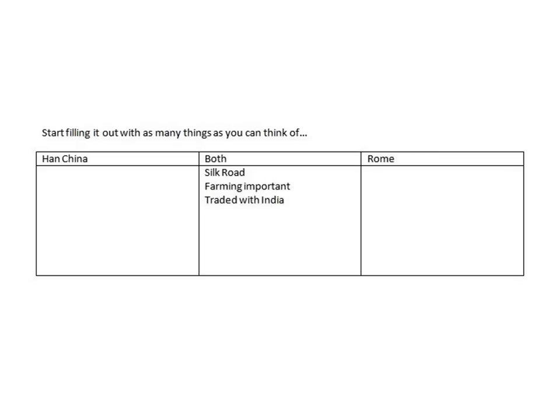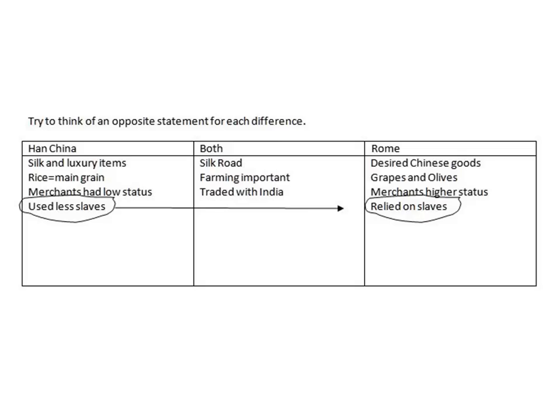Then I start looking at differences. It's always helpful to try to find an opposite statement for each difference. For instance, on the Han China side I noted they used fewer slaves, because on the Rome side they relied on slavery — that makes a direct comparison. Merchants were held at a low status in China but a somewhat higher status in Rome. The Chinese grew rice as their main grain, while Romans grew mostly grapes and olives. And the Han Chinese produced the most luxurious goods — silk being the highest — which is why the Silk Road was named as it was, while the Romans desired these goods, putting them at the opposite end of the trading spectrum.